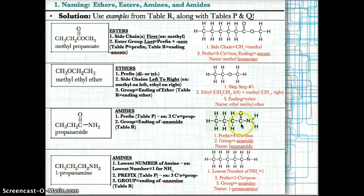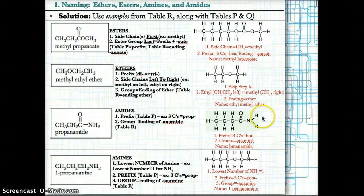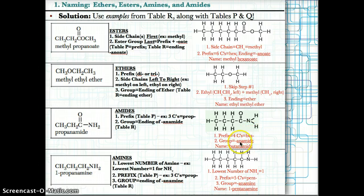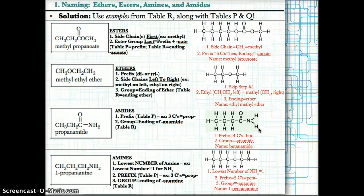Let's try another example. Here we have four carbons on the main chain, so we use the prefix but-. The group ending is -anamide because we have C double bond to O and NH2. Putting this together, you get butanamide — but- for four carbons, and -anamide for the functional group C=O with NH2.